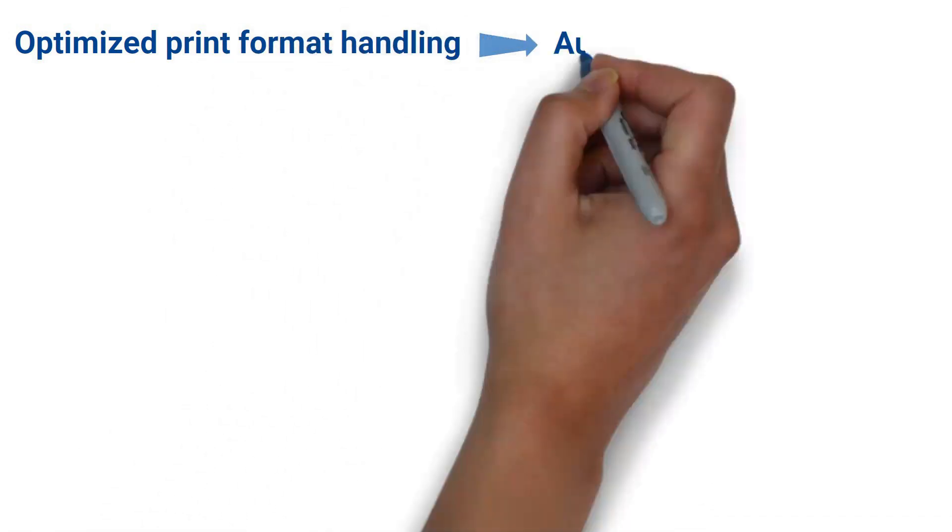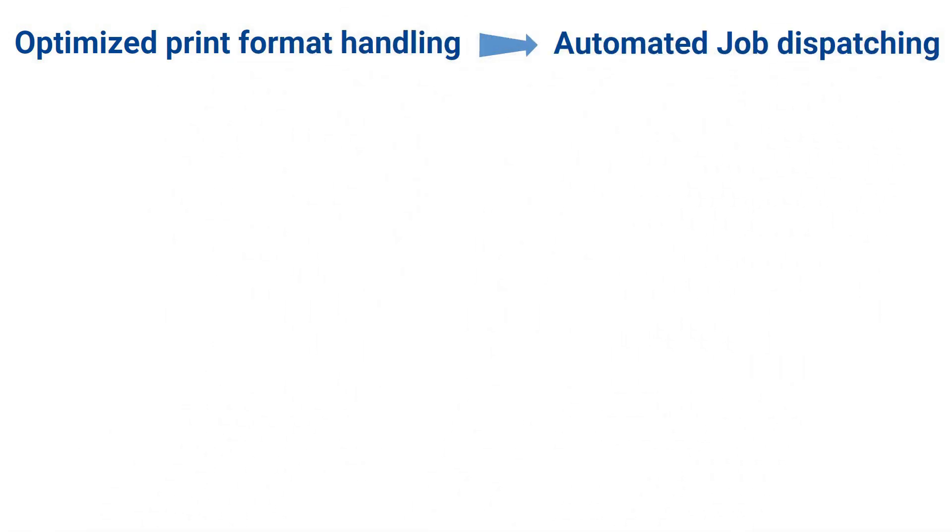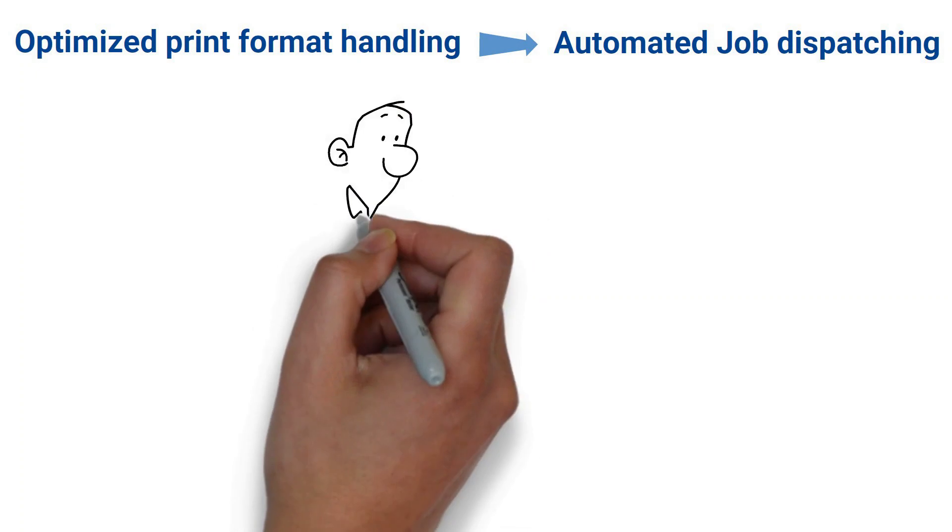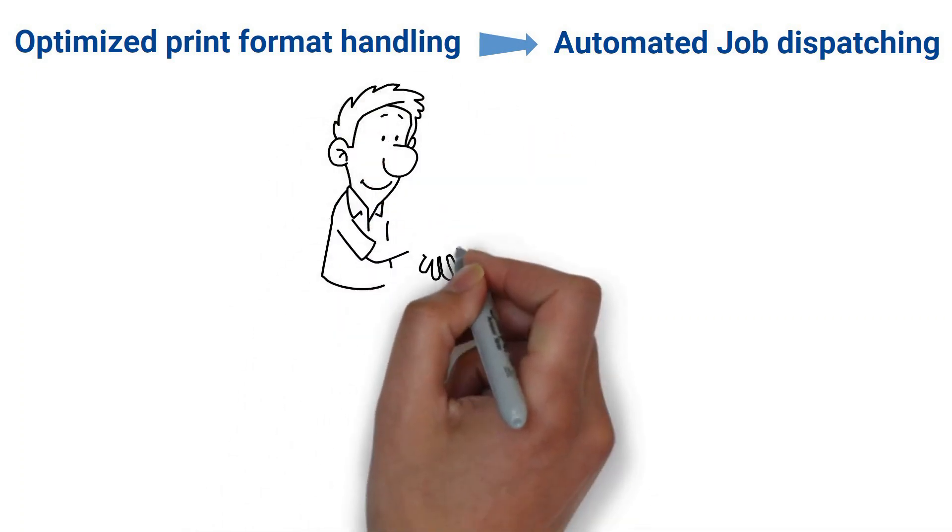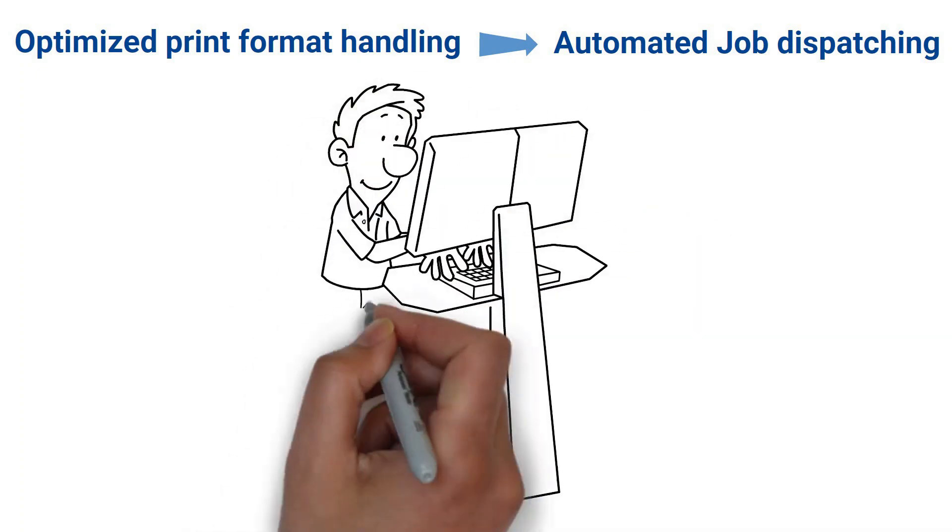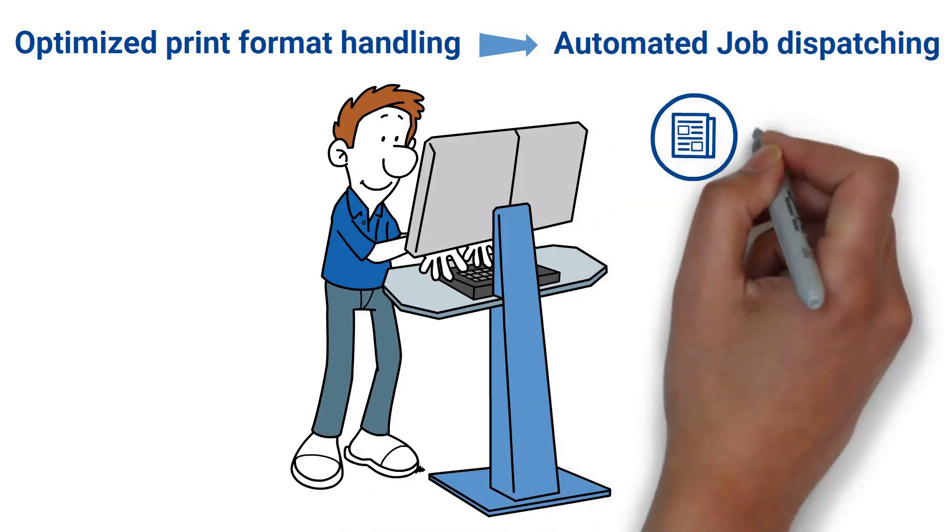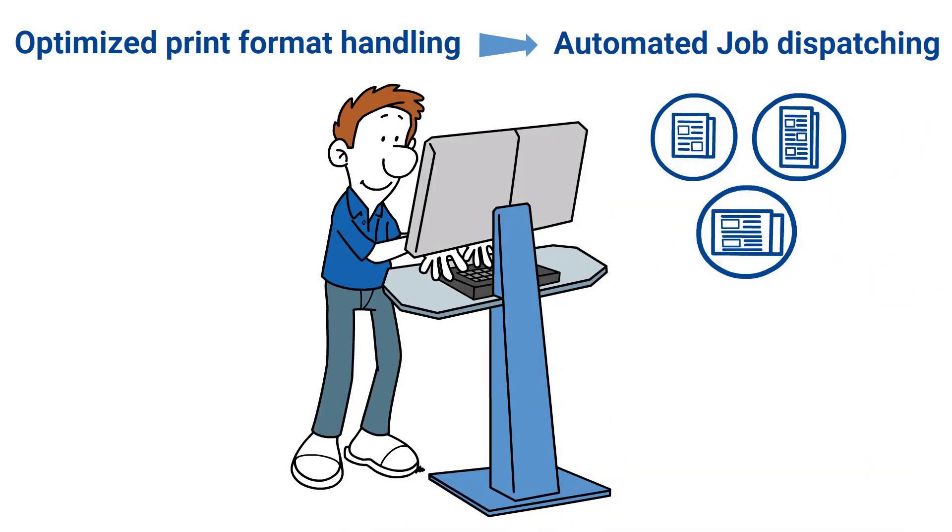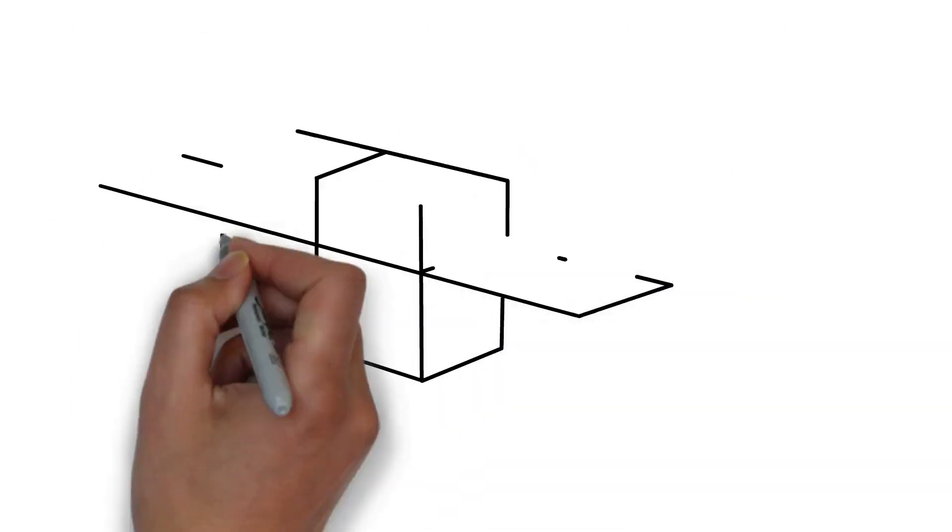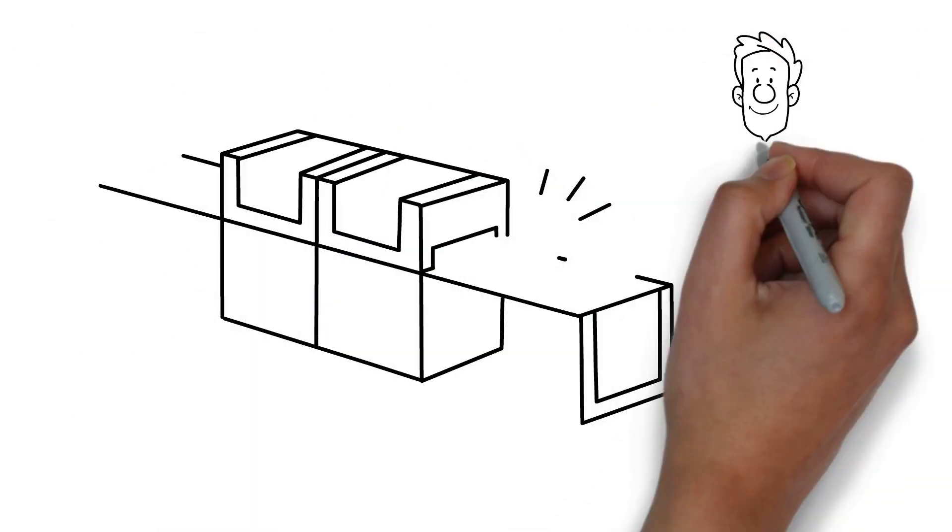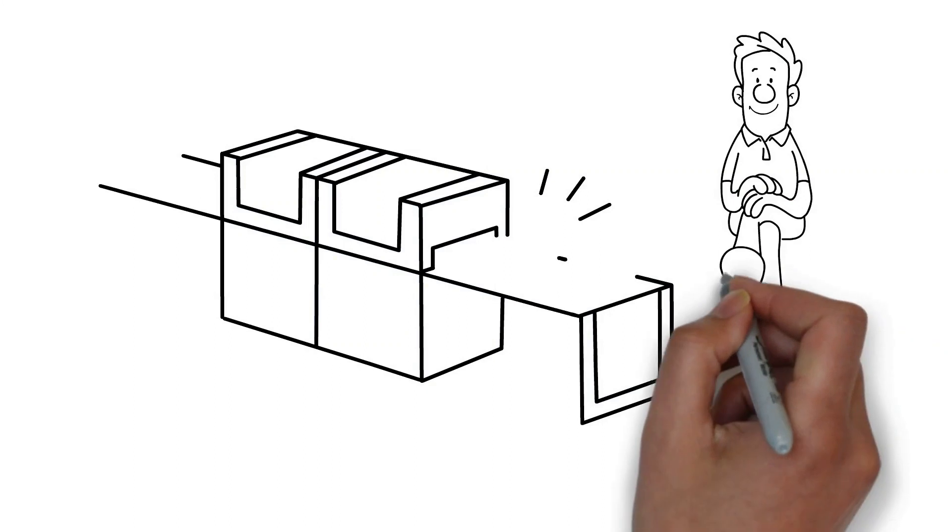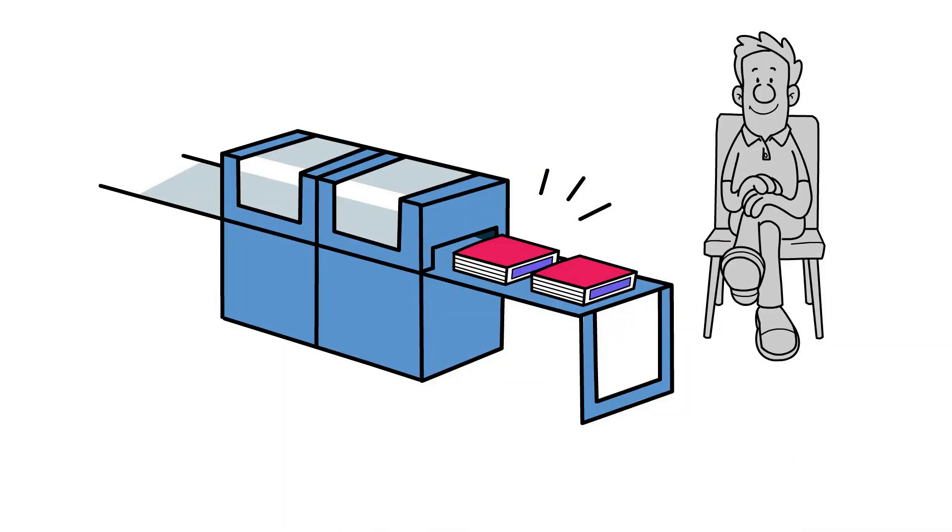Connex Line Control handles standardized digital job tickets which are automatically transmitted from your planning system and dispatches them to your digital printing press and finishing equipment, ensuring precise and efficient processing of orders with different formats and content. Connex Line Control also verifies that all jobs are appropriately controlled and configured and that signatures are collated and bound as planned.